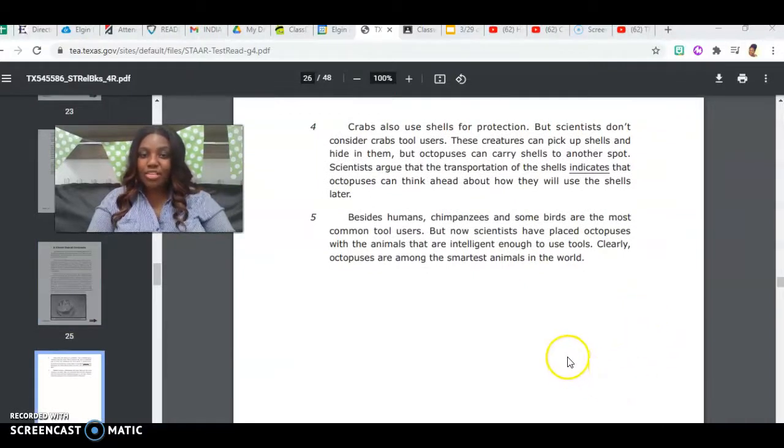Crabs also use shells for protection, but scientists don't consider crabs tool users. These creatures can pick up shells and hide in them, but octopuses can carry shells to another spot. Scientists argue that the transportation of the shells indicates that octopuses can think ahead about how they will use the shells later.